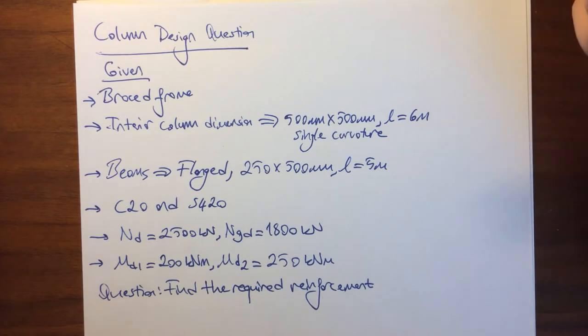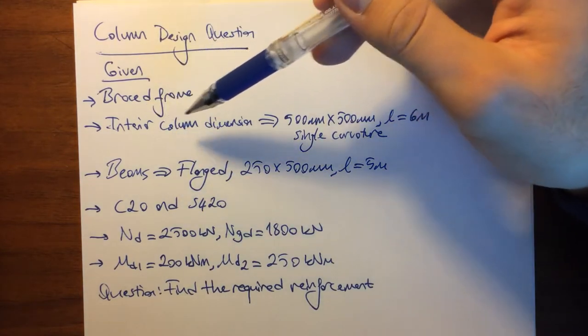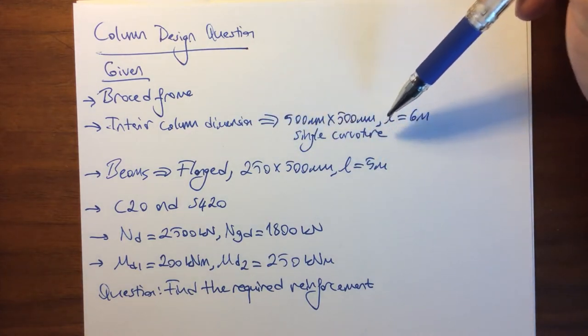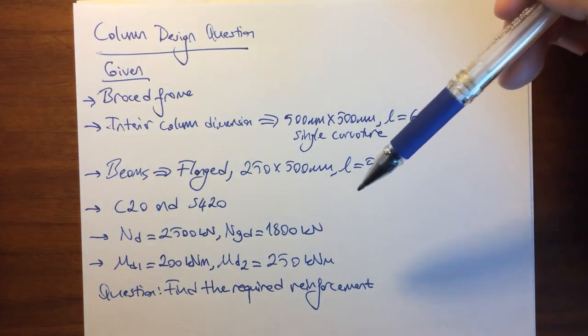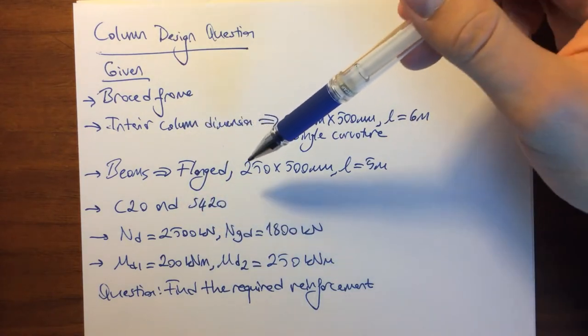The interior column dimensions are given as 500 millimeters by 500 millimeters, and the length of the columns is 6 meters. They are in single curvature. The beams are flanged with dimensions of 250 by 500 millimeters and the length is 5 meters.